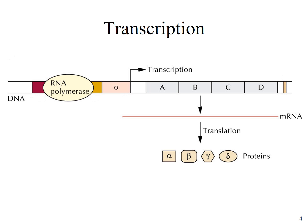This slide gives you an overview of transcription and translation. You have a double-stranded DNA, and an enzyme, RNA polymerase, attaches to it. This polymerase is going to copy the genes — genes A, B, C, and D — into a messenger RNA. This messenger RNA then brings the message from the nucleus into the cytoplasm, where it will be translated into proteins.